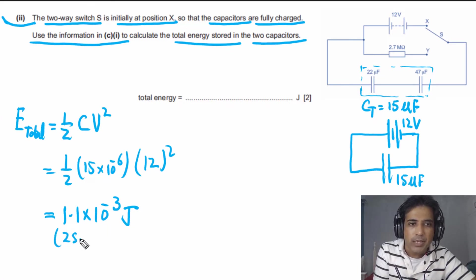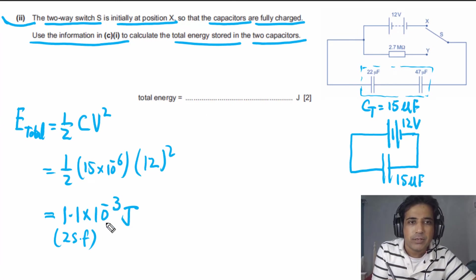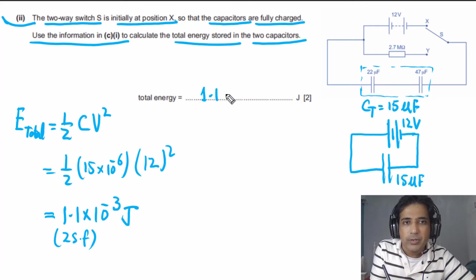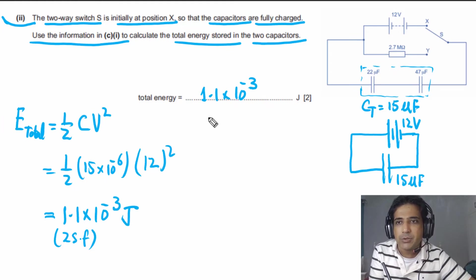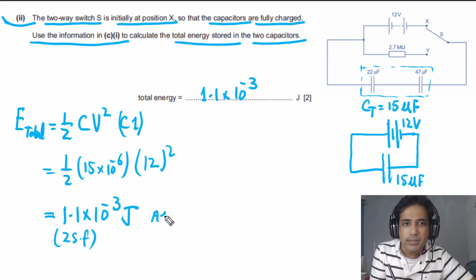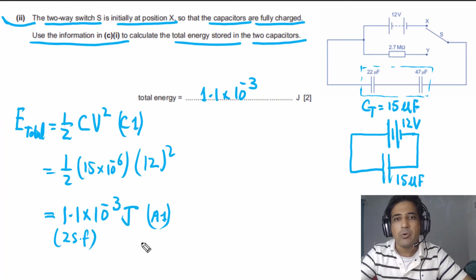The answer is given to 2 significant figures because the data has 2 significant figures — we must follow the least number of significant figures in the given data. So the final answer is 1.1 × 10⁻³ J. This question has two marks: one for writing the correct formula ½CV², and one answer mark for the correct result.